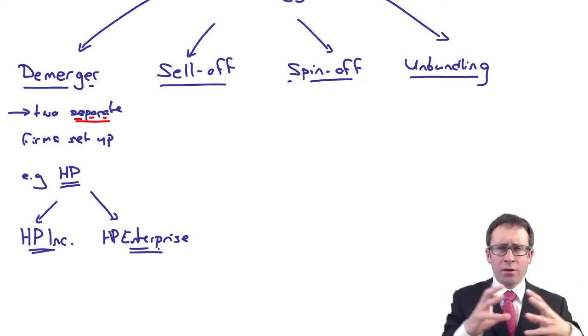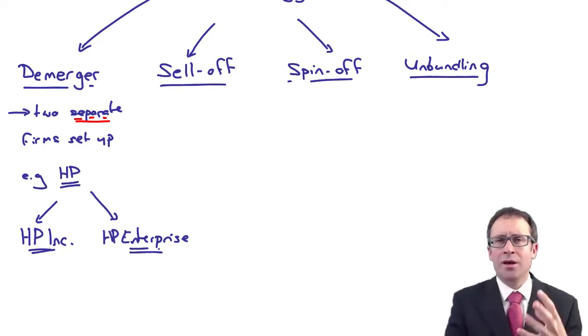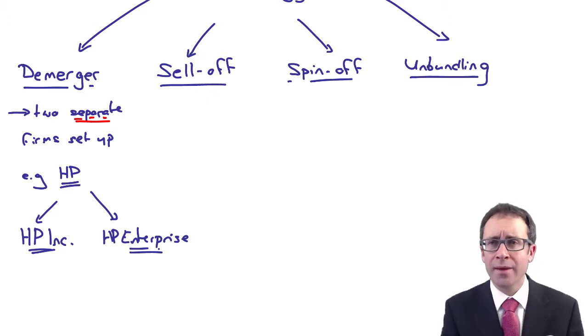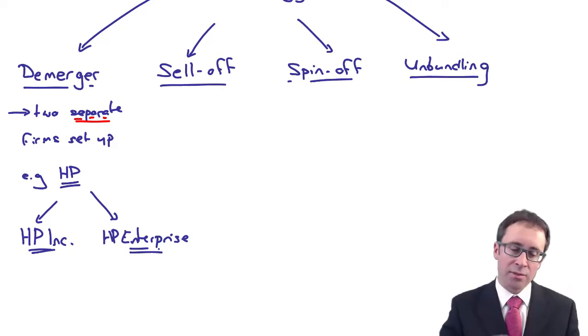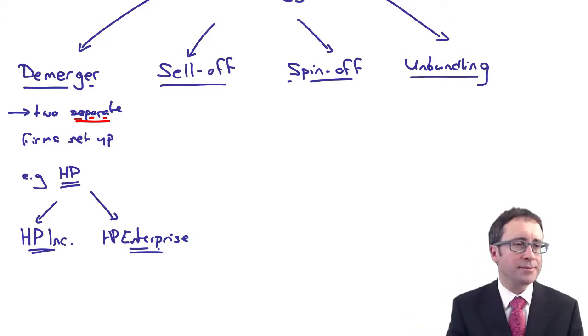By separating out the businesses, they can effectively release value to the shareholders. When HP Inc. was merged into the whole HP business, the value wasn't revealed to the shareholders. They couldn't take that value from the business in terms of buying and selling shares because the enterprise part of the business was dragging it down.